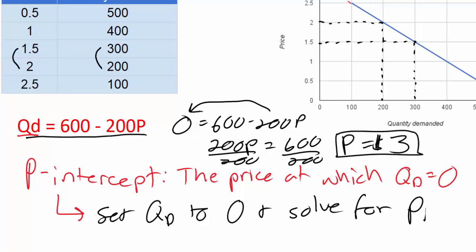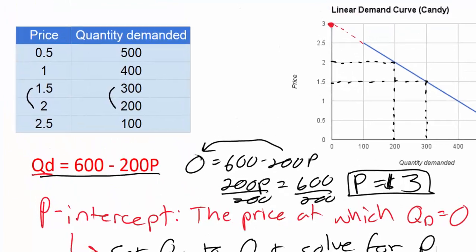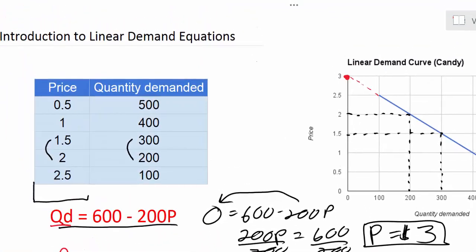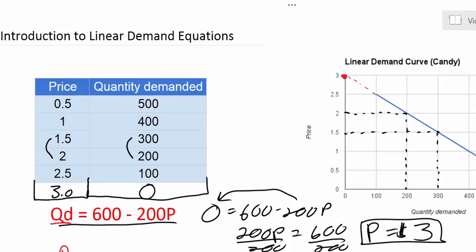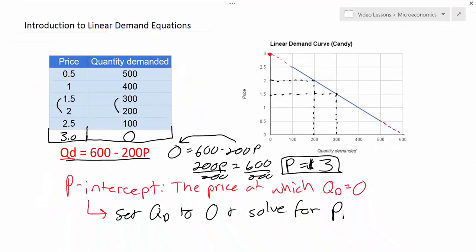This would have been easy to tell because we have a linear demand equation. In fact, if I had continued my table down one more level to three dollars, I can see that the quantity demanded would have fallen to zero. But it won't always be so obvious what the P-intercept is, and this is the method you must use to determine the price intercept if asked to do so. We're going to end this lesson here, and in our next lesson we're going to talk about some of the factors that can shift the demand curve, including things that could change both the A variable and the B variable in the demand equation.